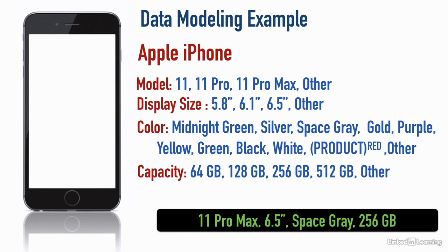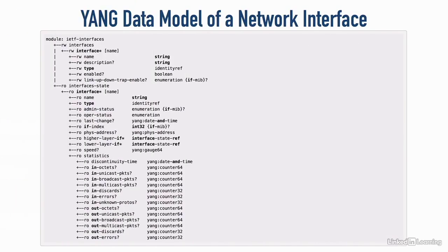That's a simplified example of what a data model is. Now let's look at an IETF data model for an interface. This interface could be from a Cisco router or a router from some other vendor. By the way, this is a screenshot from one of the DevNet labs that Cisco makes available to us. I'll take you to the DevNet labs later so you can go through their lessons on YANG and learn at an even deeper level.